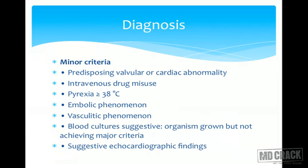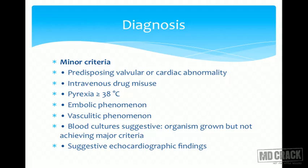The minor criteria include: predisposing valvular or cardiac abnormality, intravenous drug misuse, pyrexia of 38°C or more, embolic phenomena, vasculitic phenomena, blood cultures with suggestive organism growth but not achieving the major criteria, and suggestive echocardiographic findings.